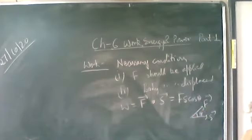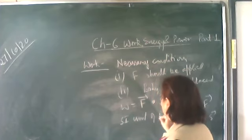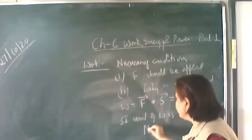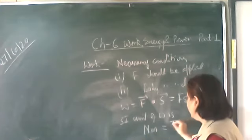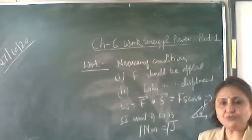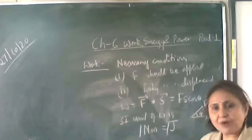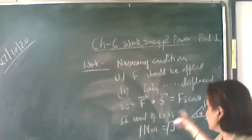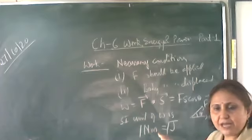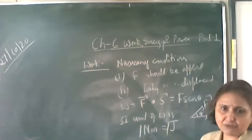The SI unit of work is the Joule. From the formula, it is Newton into meter, which is called Joule. One Joule of work is done when a force of 1 Newton displaces a body through 1 meter along the direction of force — that is, theta equals 0 degrees.